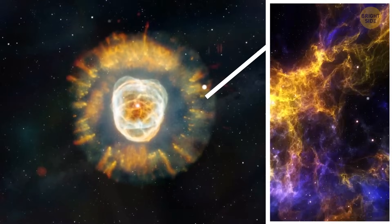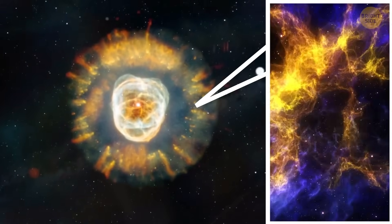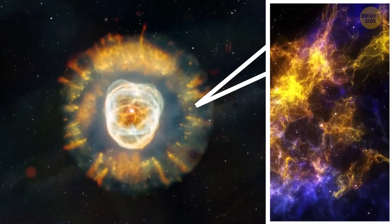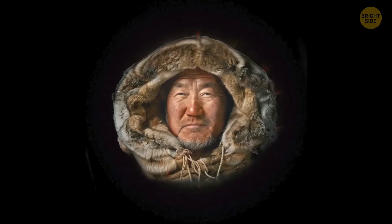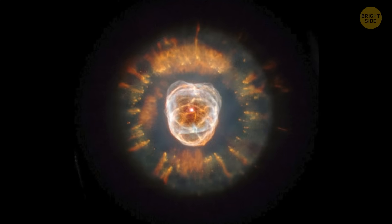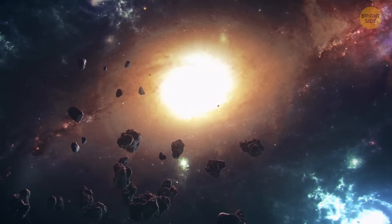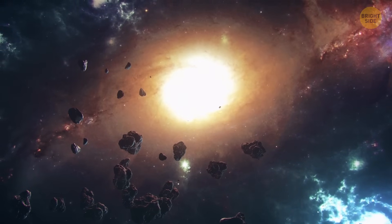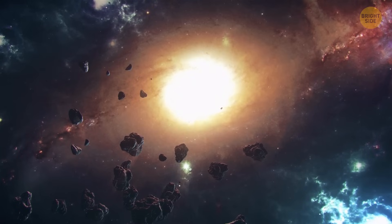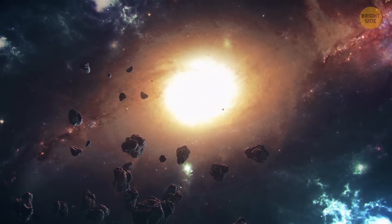The bizarre orange streaks in the outer part of the cloud stretch light years away in all directions. As for the Eskimo's face, even though it resembles a ball of twine, in reality, it's a bubble of material blown into space by the wind of high-speed material produced by the central star.